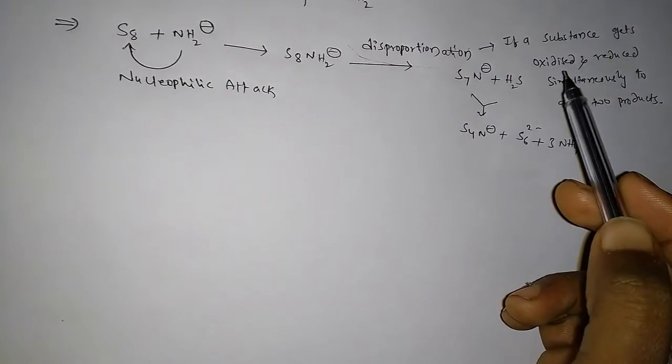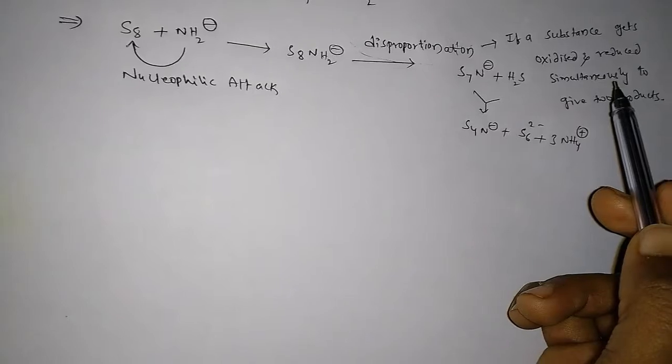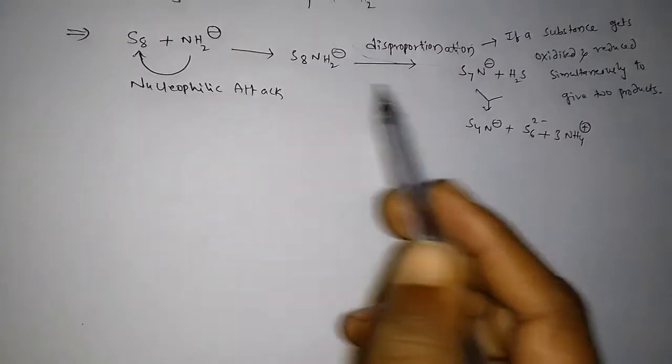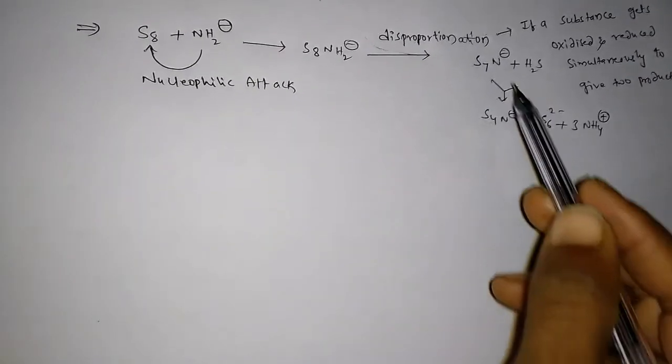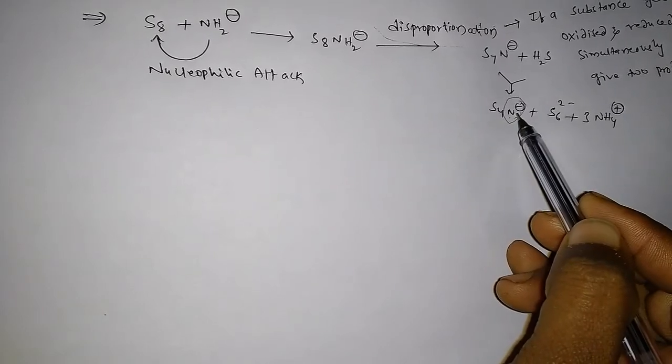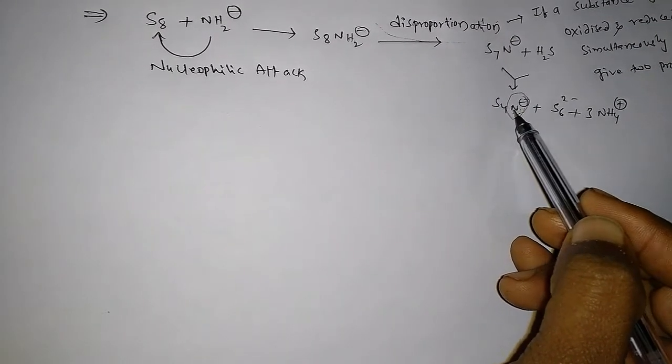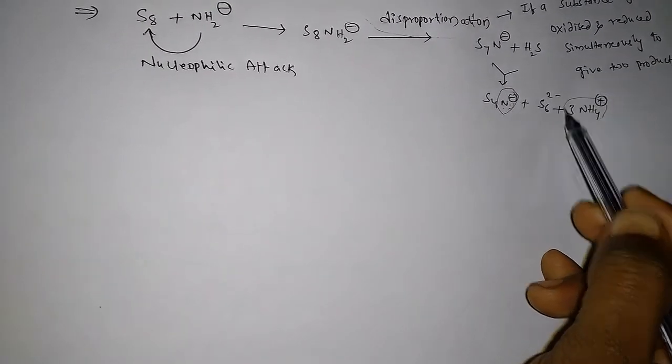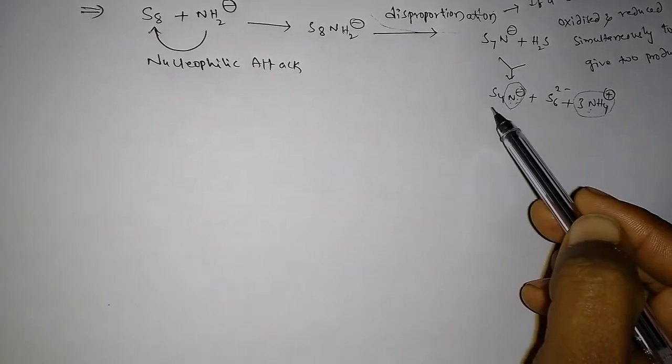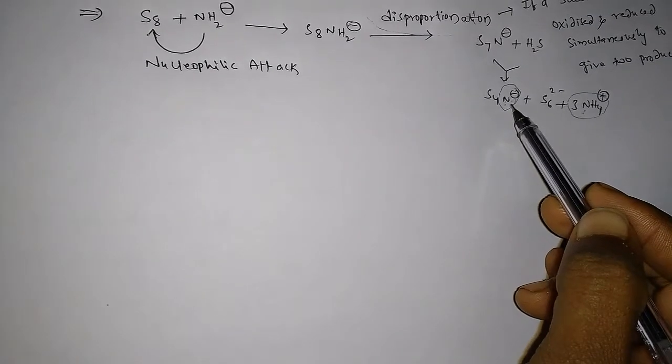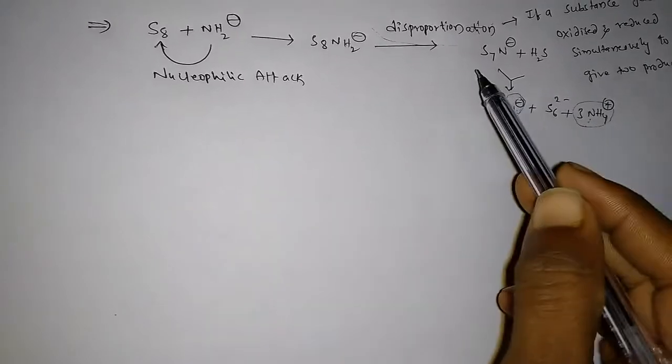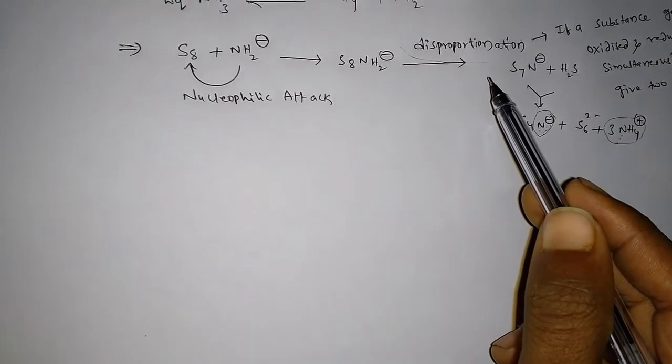If a substance gets oxidized and reduced simultaneously to give two products is simply called as disproportionation. So in this reaction, ammonia forms here - it is reduced, it gets electrons and gets negative charge on it. And in this NH4+, it gets positive charge, that means it is oxidized. So in a reaction, the ammonia gets reduced and oxidized. That's why this reaction is simply called as disproportionation reaction.